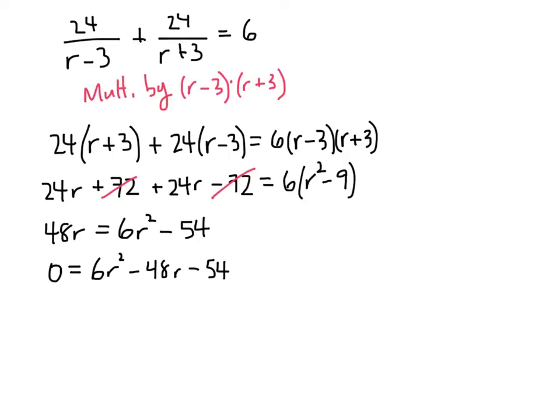It's at this point that we could use the quadratic formula. Nothing wrong with that. But this actually factors somewhat nicely, so let's do that. First let's pull out a 6. When we factor 6 out of this, we get r squared. Factoring 6 out of 48 gives us 8. And then factoring 6 out of 54 gives us 9. 54 divided by 6 is 9.